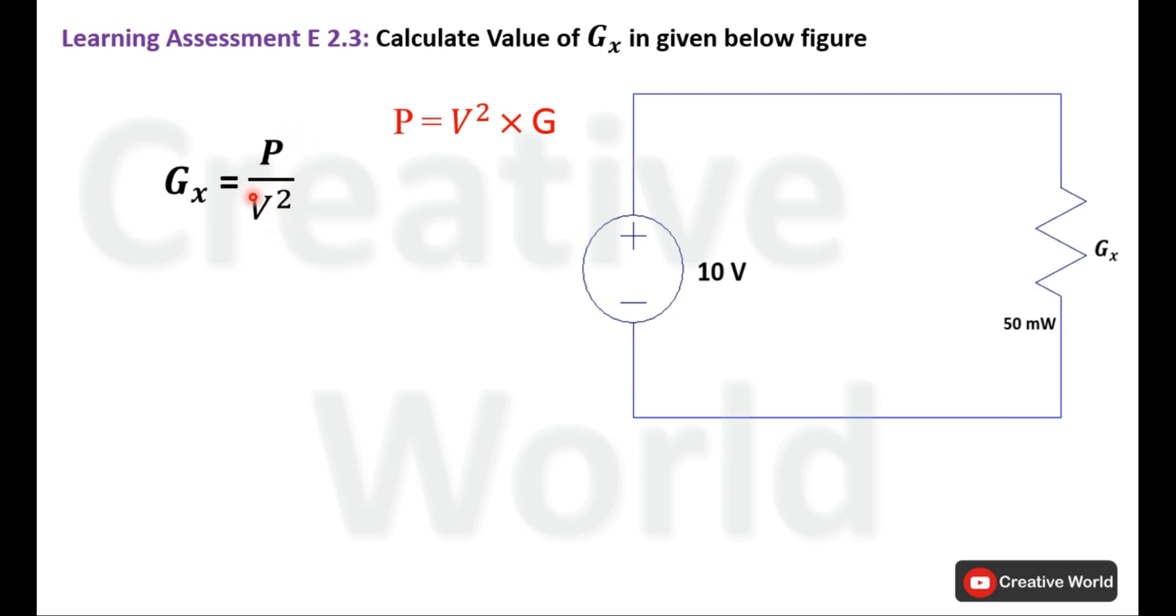We have these two quantities. Enter these quantities into the equation. Power is 50 milliwatt and voltage is 10. Solve this equation to get the value of GX that is 500 micro Siemens.